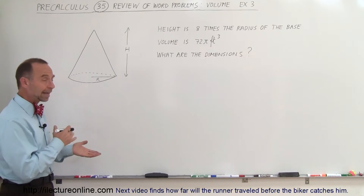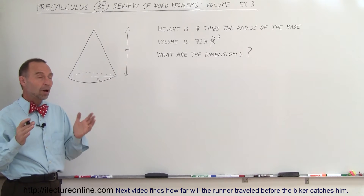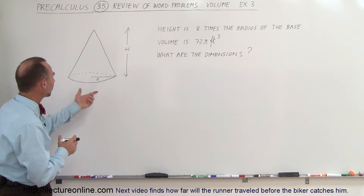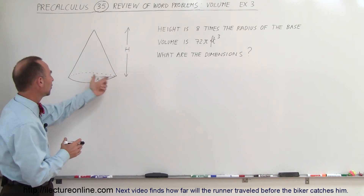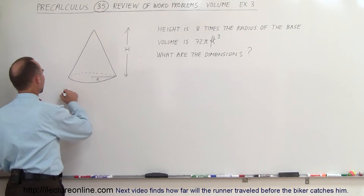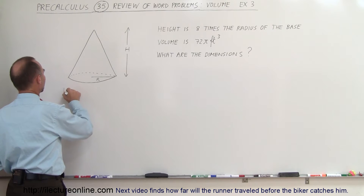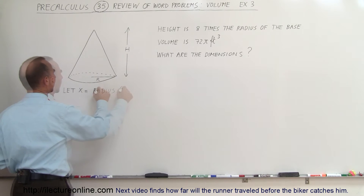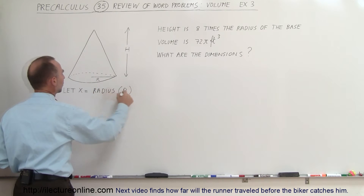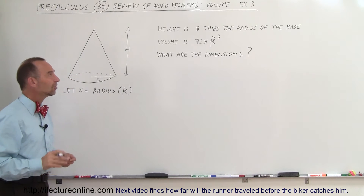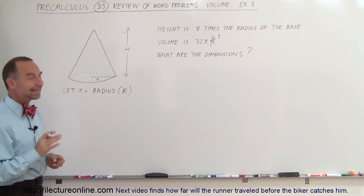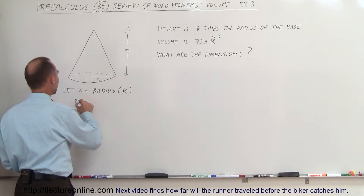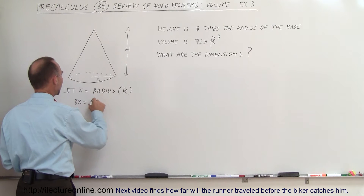You want to let X represent the smallest dimension. In this case, the smallest dimension would be R, so we're going to say let X equal the radius, and since the height is 8 times the radius, we can then say that 8X equals the height H.